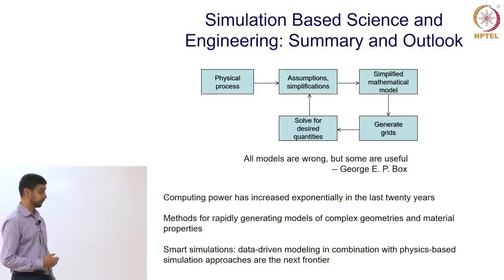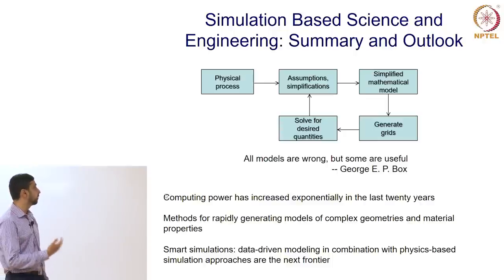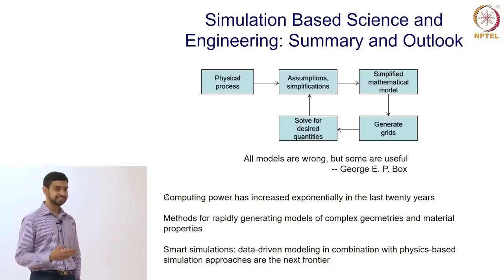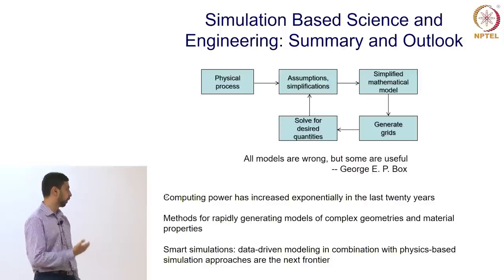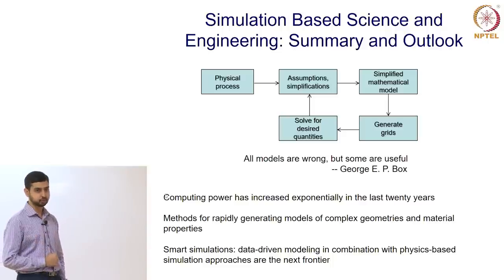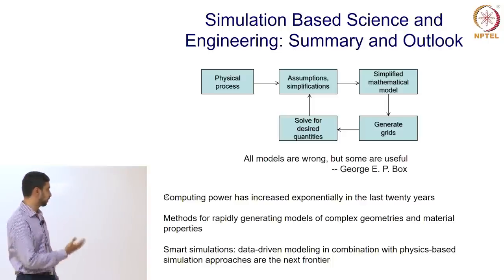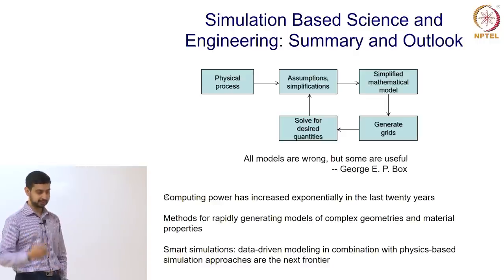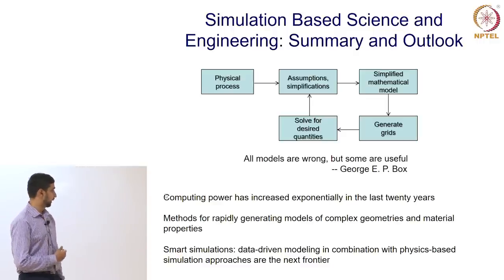Most of the real world has complex geometries, so we need methods for rapidly generating models on really complicated geometries with spatially and temporally varying material properties. In the current world where we have more and more data available, we can couple physics-based simulations with data-driven modeling approaches — smart simulation where gridding is done through machine learning or neural network approaches, and constitutive models are developed using deep neural networks. This is the future of where engineering and science is headed.